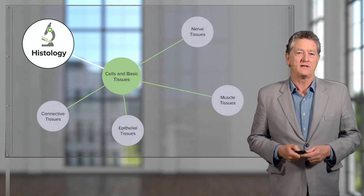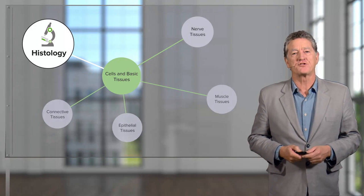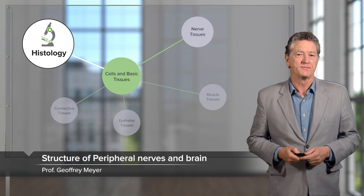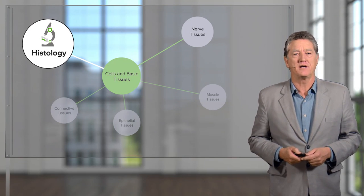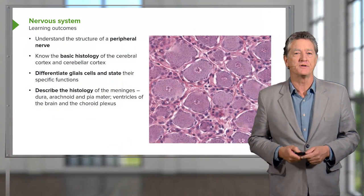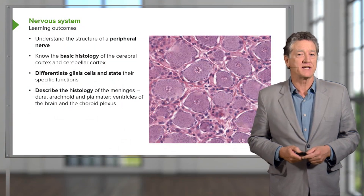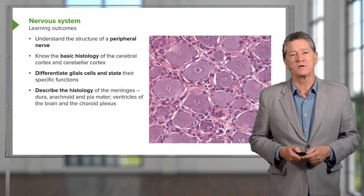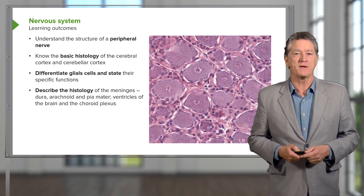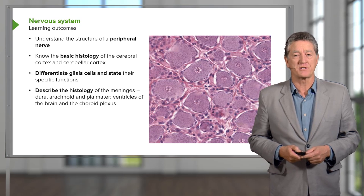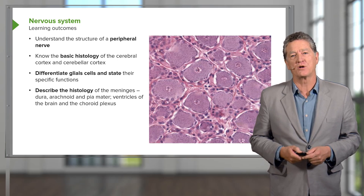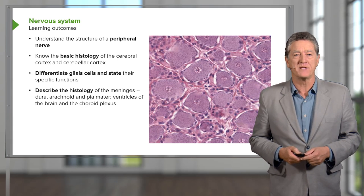In this lecture, I would like to cover the structure of peripheral nerves and the brain. At the end of the lecture, I'd like to have some understanding of the structure of a peripheral nerve, of the basic histology of two very important components of the brain. I'm going to describe how nerve cells are supported by glial cells and also how the brain and spinal cord is protected by the meninges.